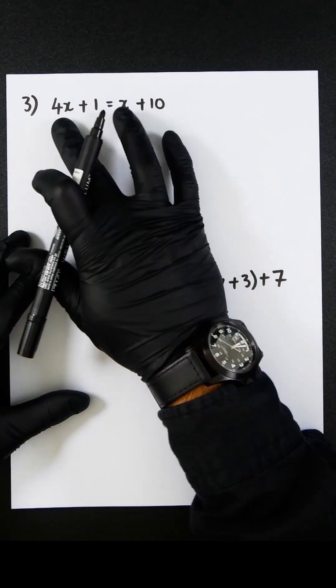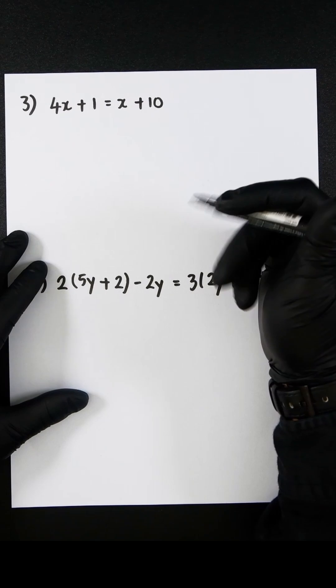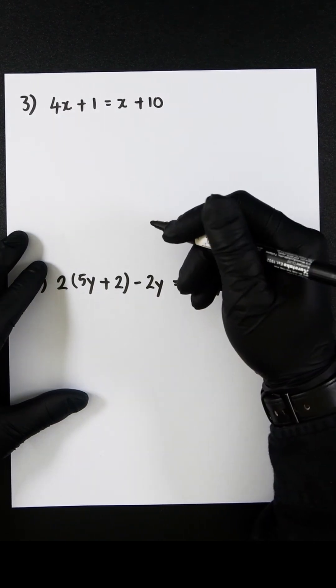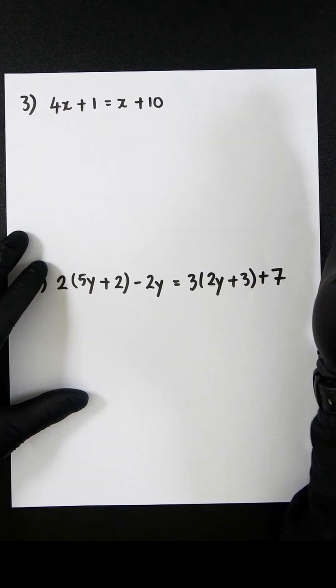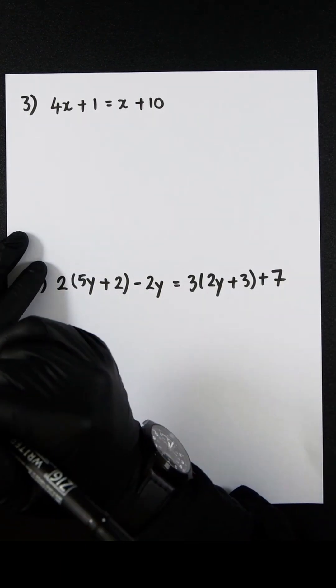Now we have two variables on both sides. Still pretty straightforward. Let's move all the numbers to the right-hand side and all the unknown variables to the left-hand side.